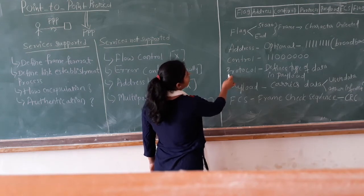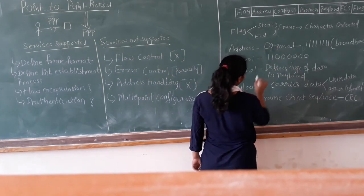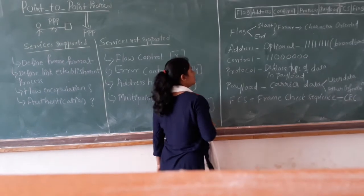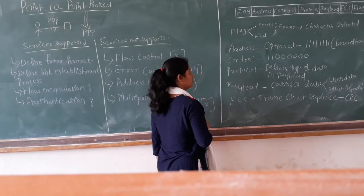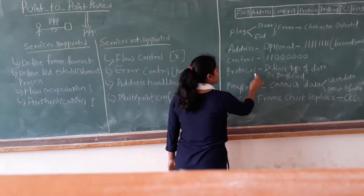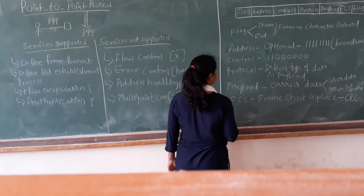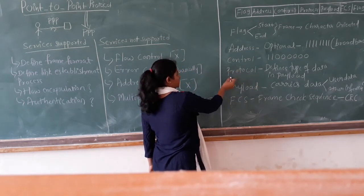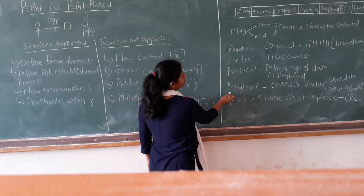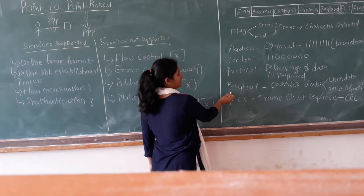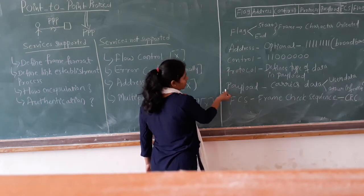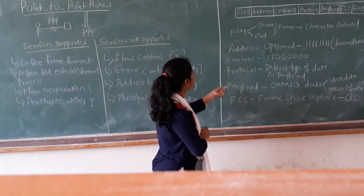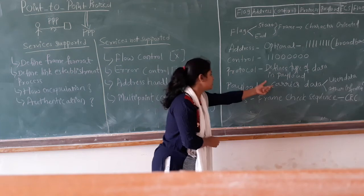The next field is the protocol field. Protocol defines the type of data that the payload is carrying. The data can be either user data or other information. It will not tell about the actual data — it will only tell about the type of data, whether it is user data or other information. The next field is payload, which is the actual data. The difference between protocol and payload is: protocol defines the type of data, whereas payload actually carries the data.